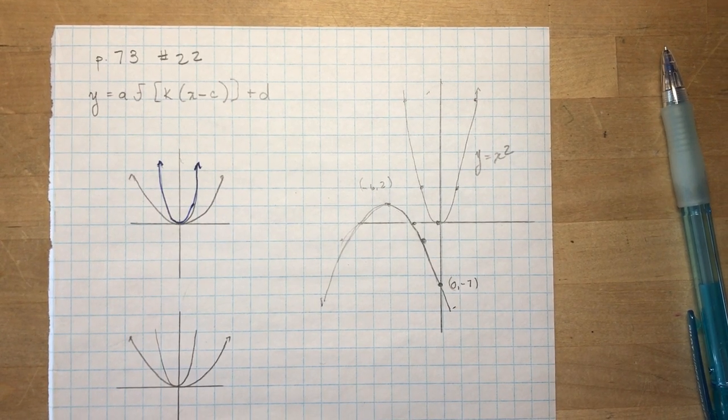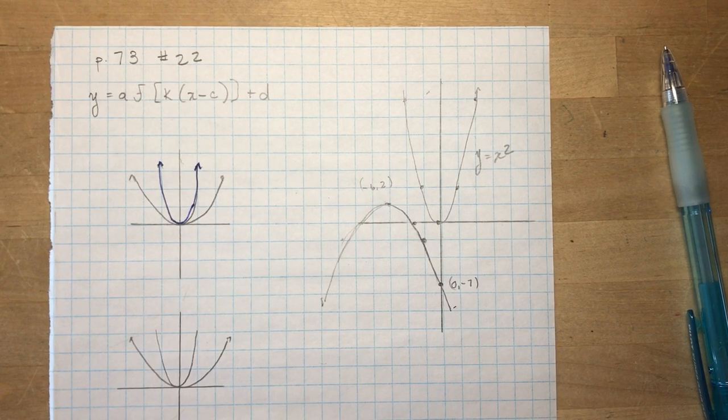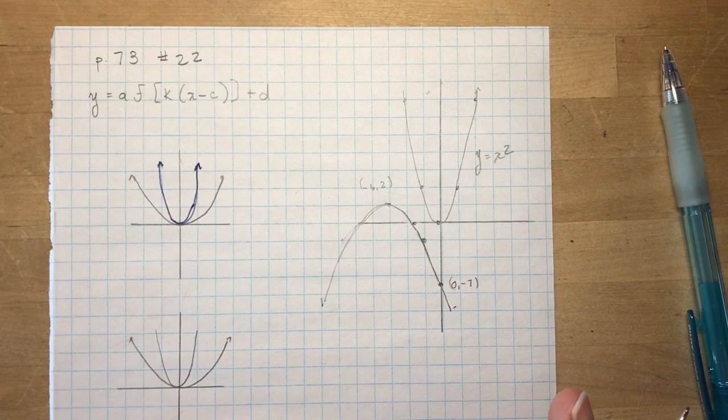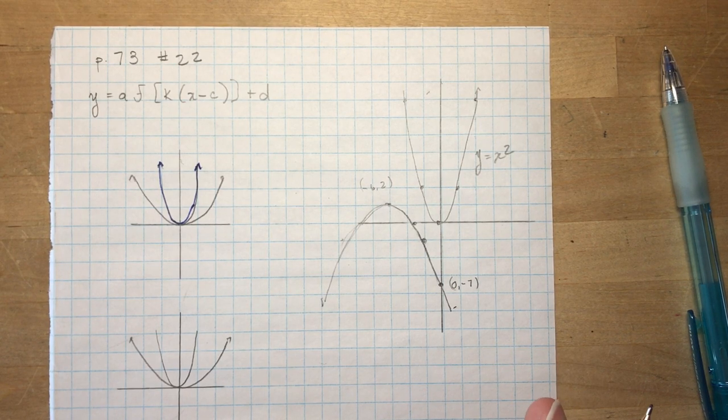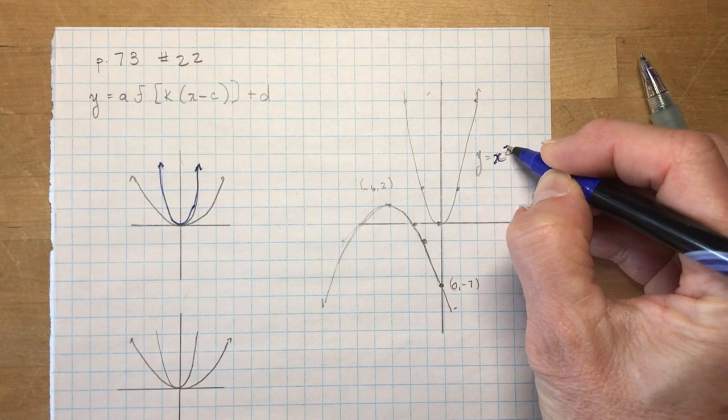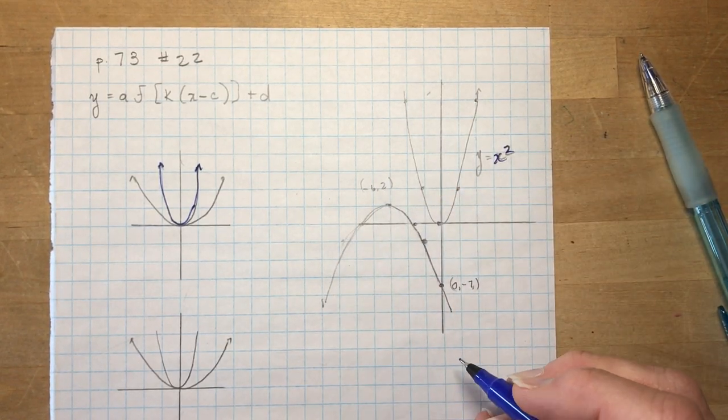Page 73, number 22. The question asks you to determine a combination of transformations that would produce the second parabola from the first and determine a possible equation for the second parabola. So the second parabola obviously is this one over here.